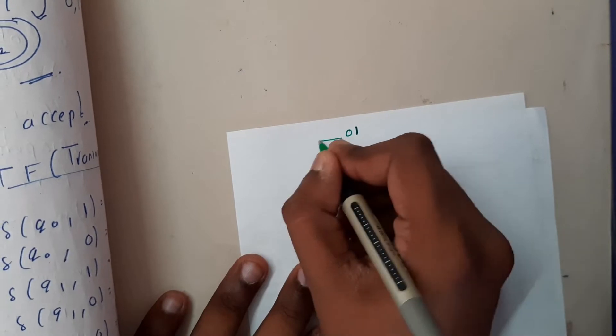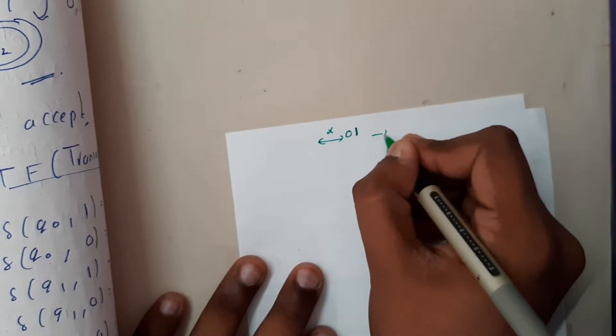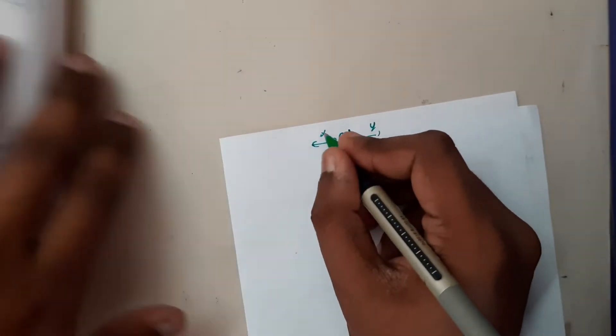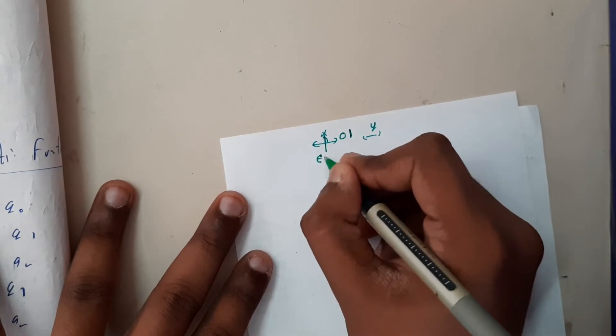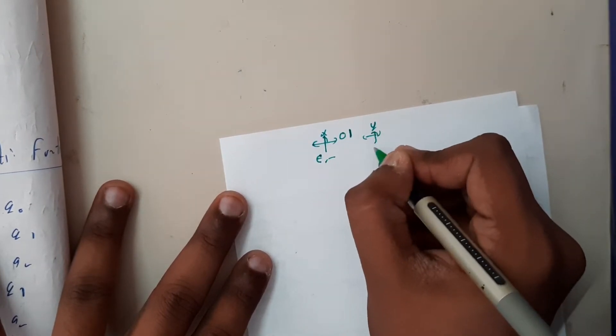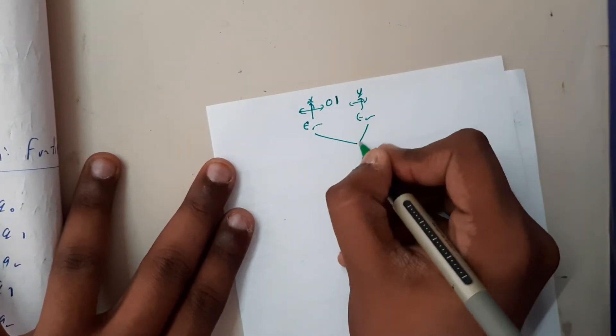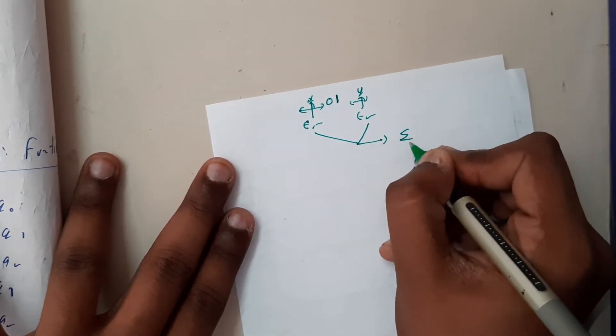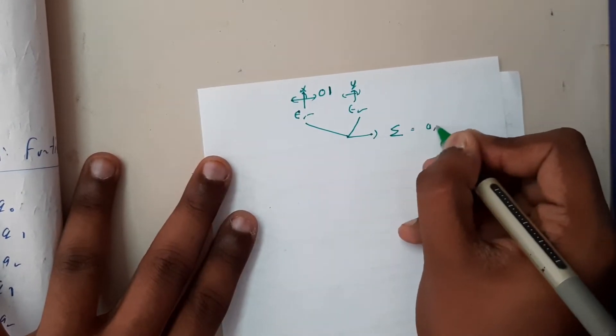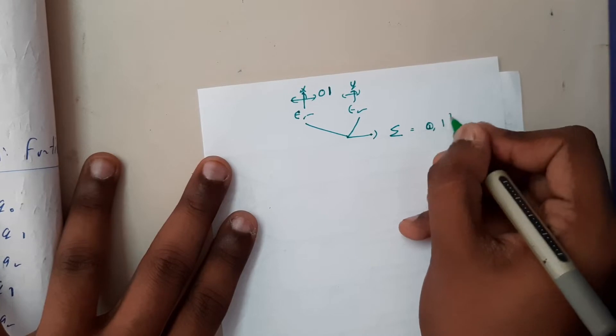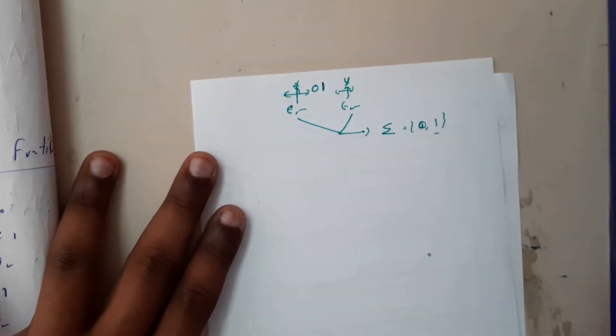There could be x, there could be y. This x can be empty or with some values and y could be empty or with some values, but these should belong to sigma, that is zero comma one or a comma b. Zero one is compulsory.